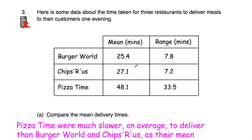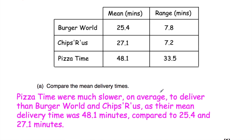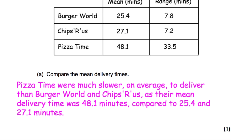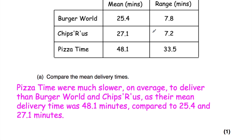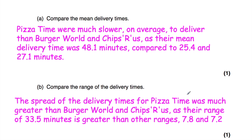Comparing these restaurants: Burger World and Chips-R-Us deliver much quicker than Pizza Time. Pizza Time was much slower on average, with a mean delivery time of 48.1 minutes compared to 25.4 and 27.1 minutes. For the spread of delivery times, Pizza Time is much more spread out than the other two — its range of 33.5 minutes is much greater than the ranges of 7.2 and 7.8 minutes for the other restaurants.